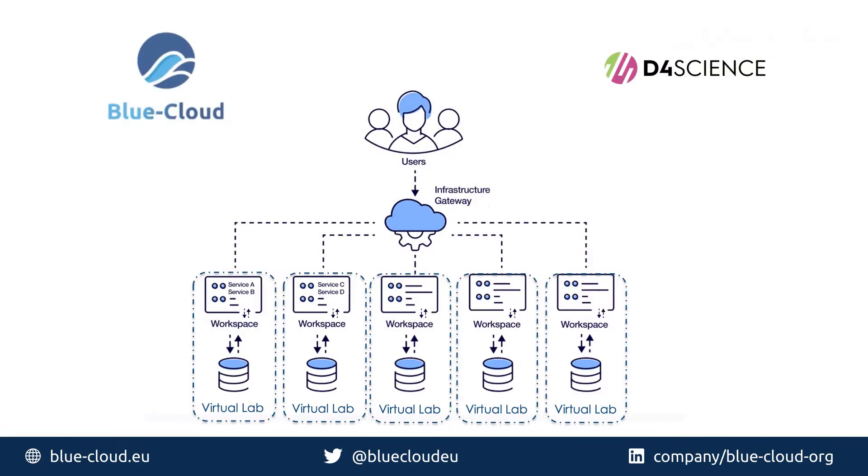InfoScience is a typical distributed cloud infrastructure designed to support researchers and scientists in performing their activity. To better explain the value added that we try to offer to all our scientists, we could start from a simple example of a scientist that needs to access a service, and this service uses a database.